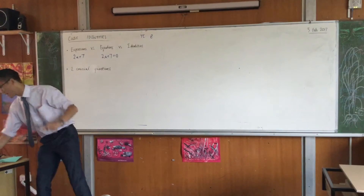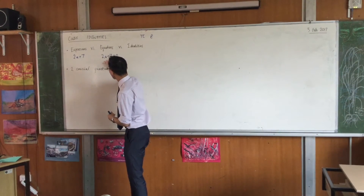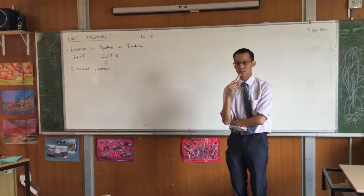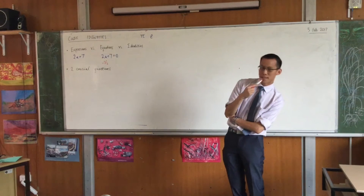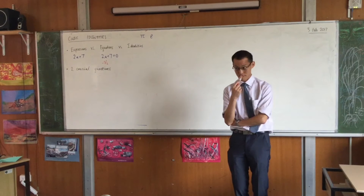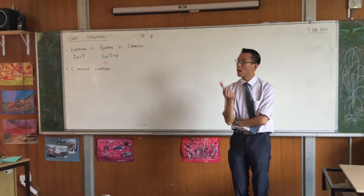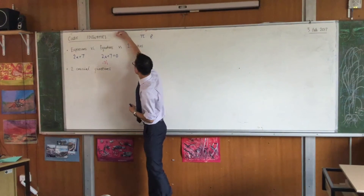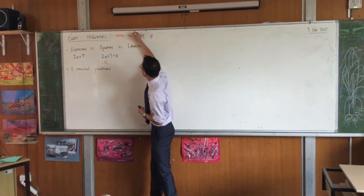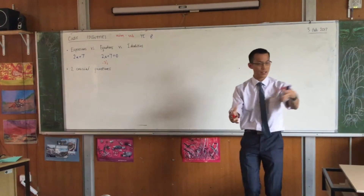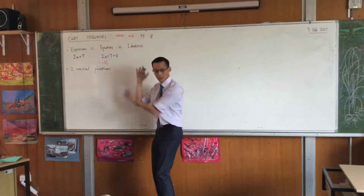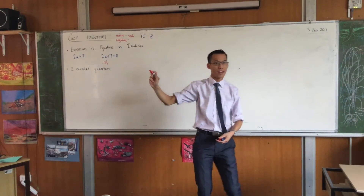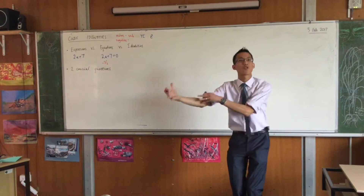Just a minor aside — I do mean negative three and a half, not minus three and a half. What's the difference between minus and negative? Minus is an operation — it's a verb, it does something: something minus something else. Whereas negative is not a verb, it's not an action. What kind of word is negative? It's an adjective — it describes something else.